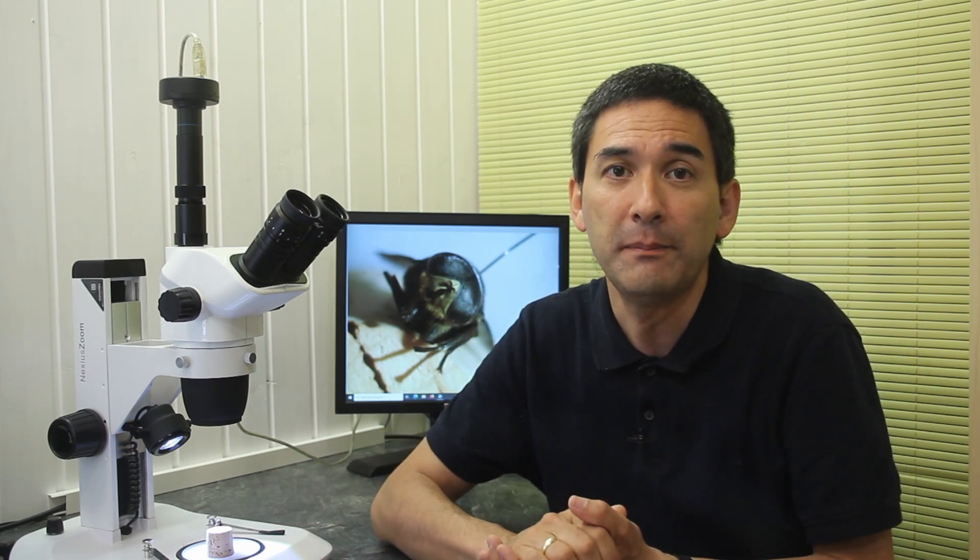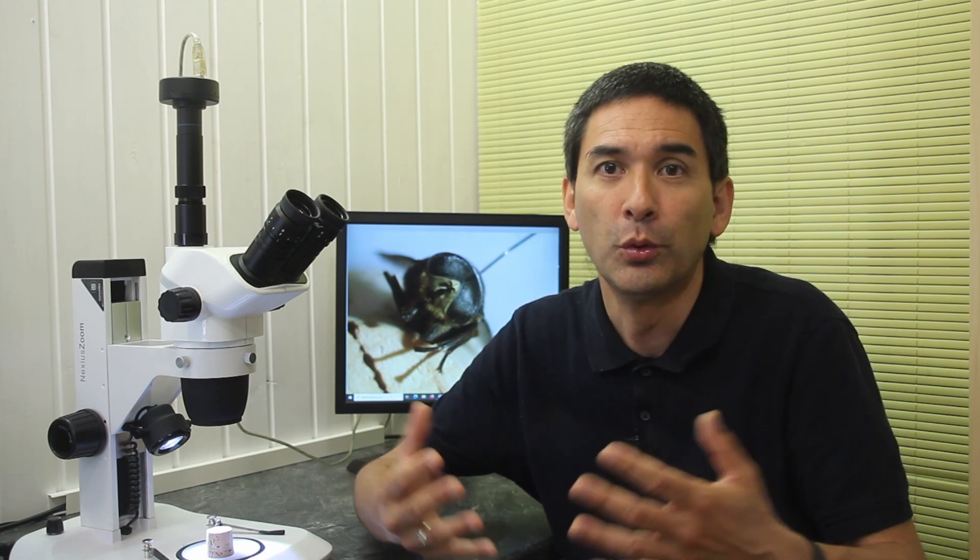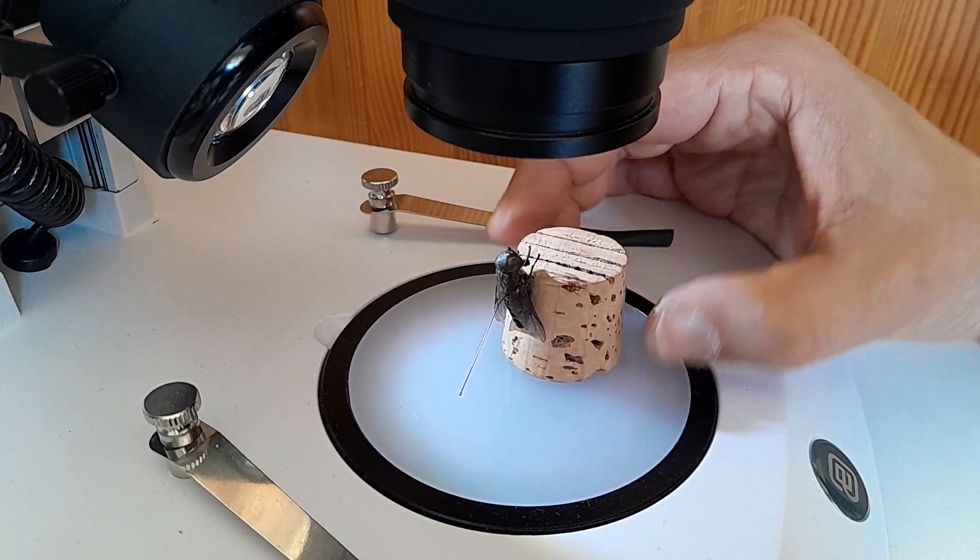The 2x Barlow really decreases the distance quite a bit that is required. You also need more light, of course. And here I have now raised the specimen a little bit so that I'm able to focus all the way down to the specimen.